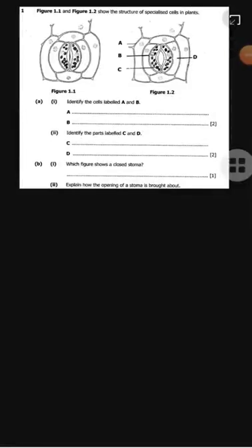In this video, we're looking at Biology Paper 2, October/November 2015 exam. Figure 1.1 and 1.2 show the structure of specialized cells in plants. The question asks to identify the cells labeled A, and you can see that the cells labeled A are the epidermal cells.